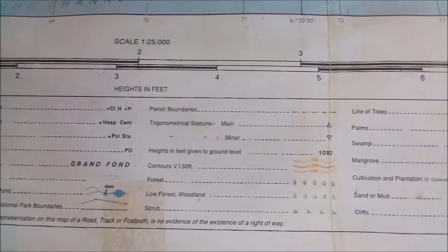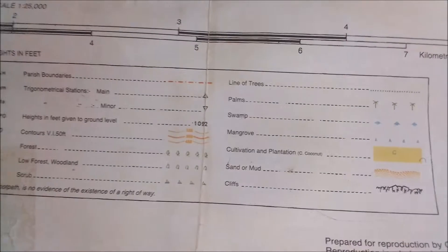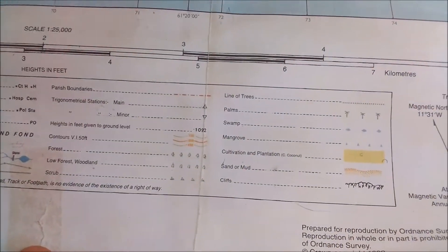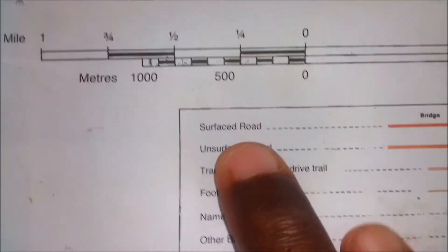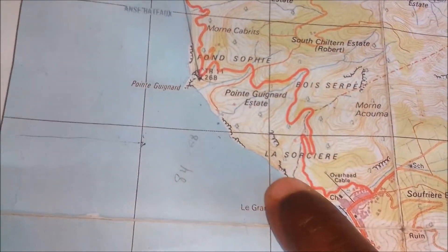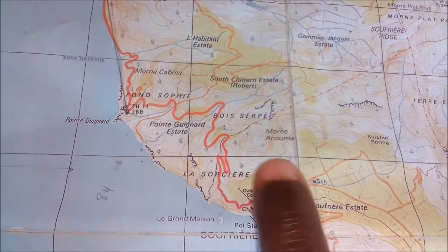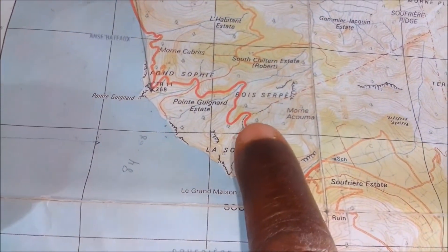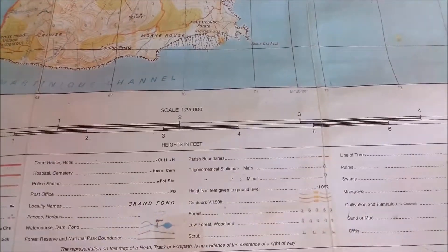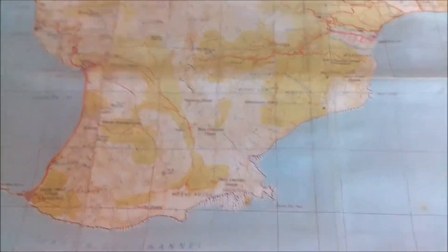The fourth key element a map should have is what you call a key. The key is that section of the map that helps you interpret the signs, symbols, or abbreviations that exist on the map. For example, 'surface road red' — when you look at the map, that means the road is a surface road, also called a Class A road for some persons.